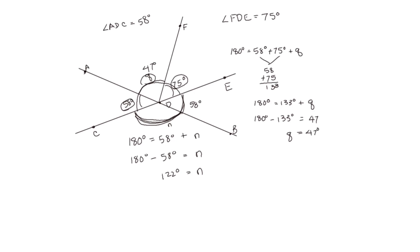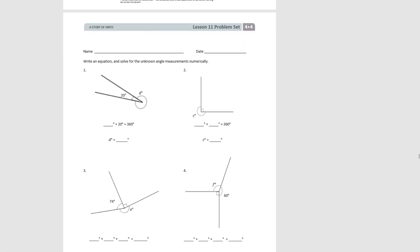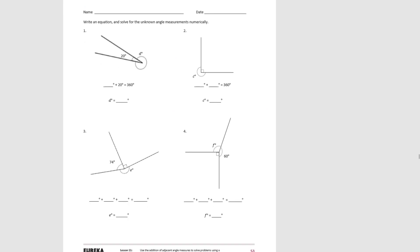Let's work through our problem set. For number one, we're looking for unknown angle D. We know the full circle measures 360 degrees, so D plus the known angle degrees equals 360. Therefore, D equals 140 degrees.